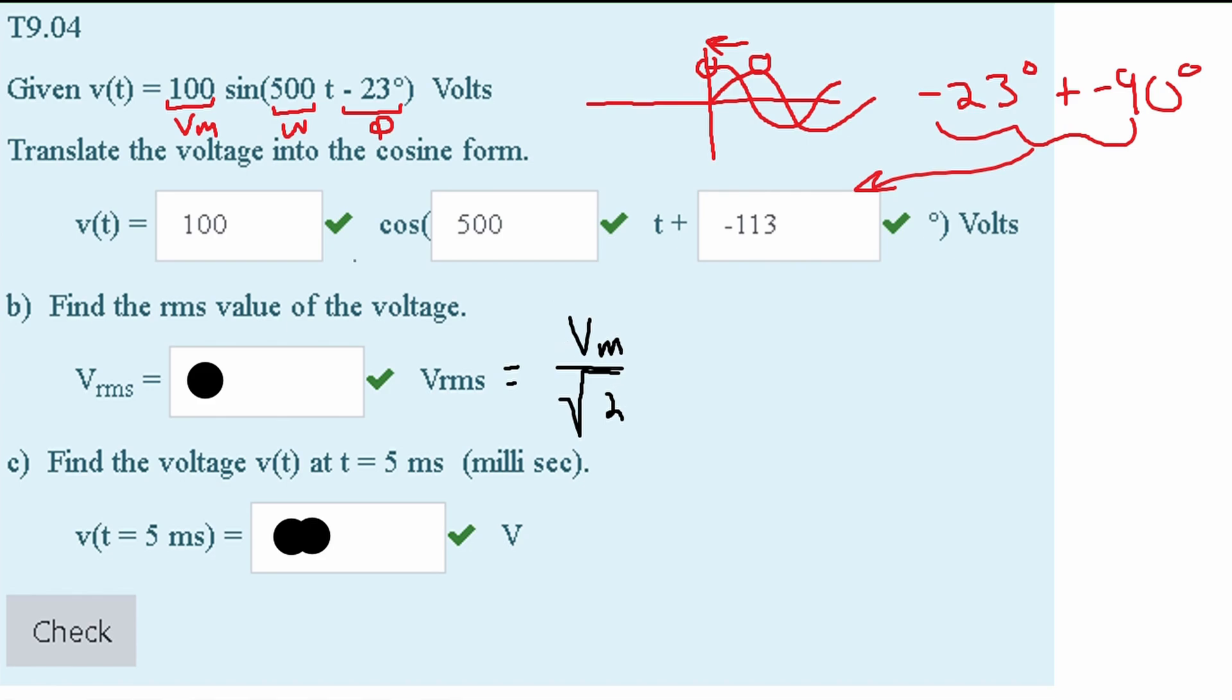So we are going to plug in our Vmax, which we know to be 100. And we know the 100 divided by the square root of 2 is going to give us approximately 71 volts.